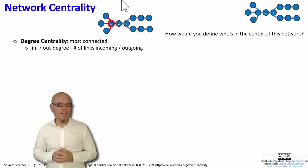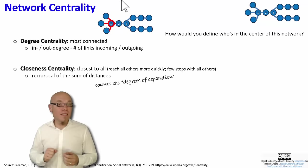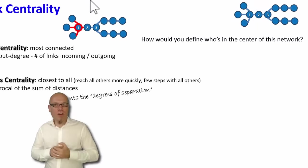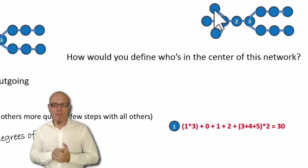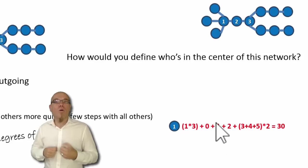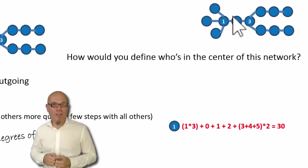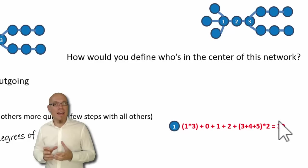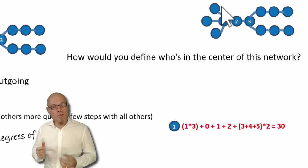But there are other ways you can go about it. For example, you can say the center of the network is the node that is closest to all the other nodes. That means you count the degrees of separation from one node to another. And then you basically count, which one is the closest node? Let me start with node number one. He has one degree of separation to these three nodes here. So that's one times three. One step to go from one to two, two steps to go from one to three. And then there are three steps here, four steps here, five steps here, and that happened twice. So I sum this all up, and we get 30 steps, 30 degrees of separation to go from node number one to everybody else.